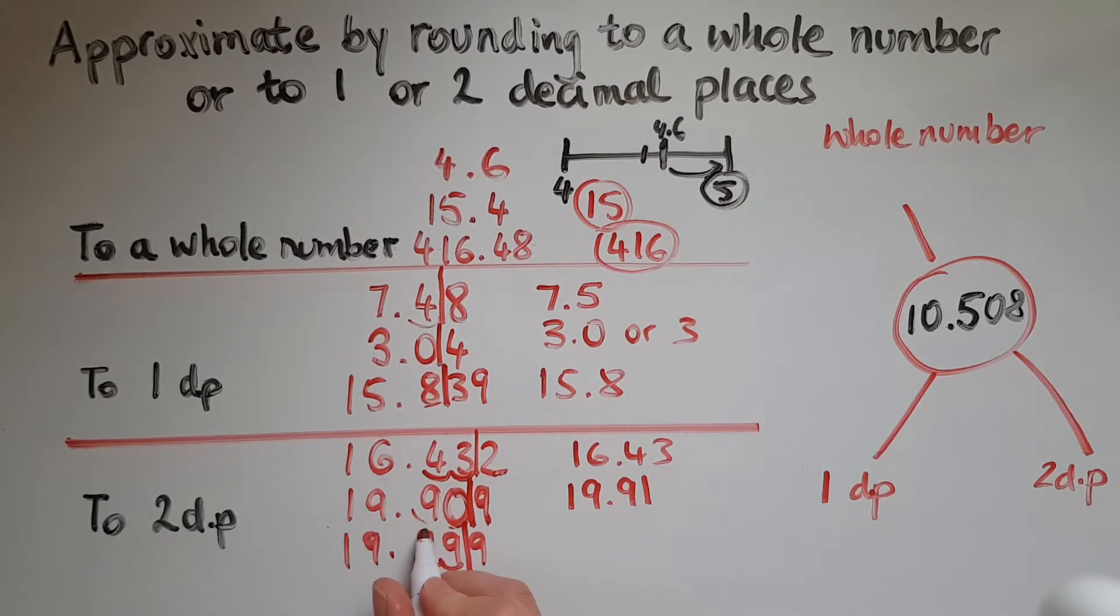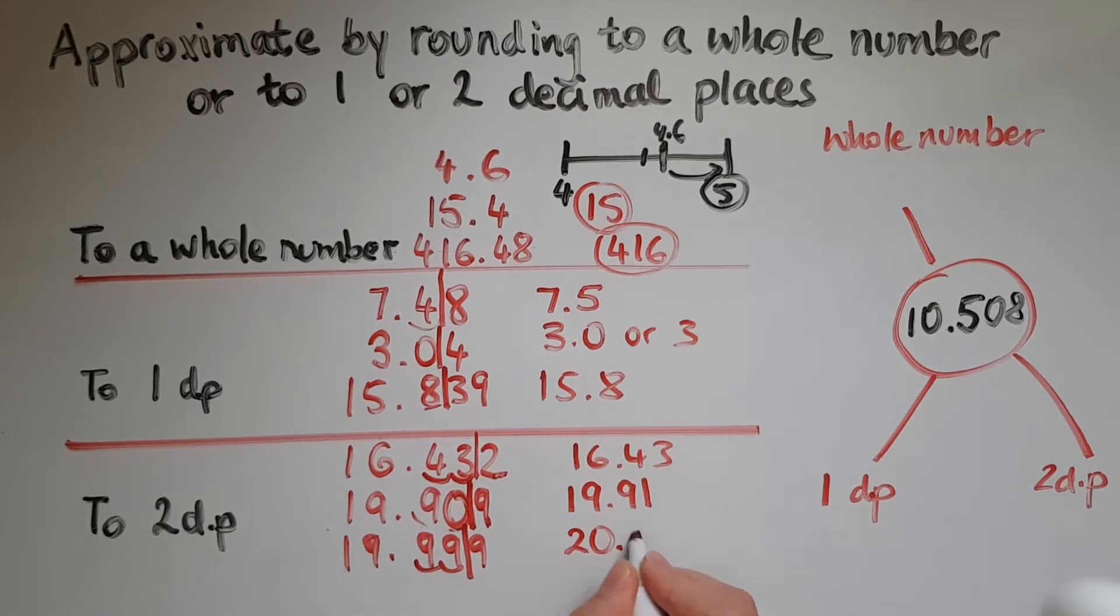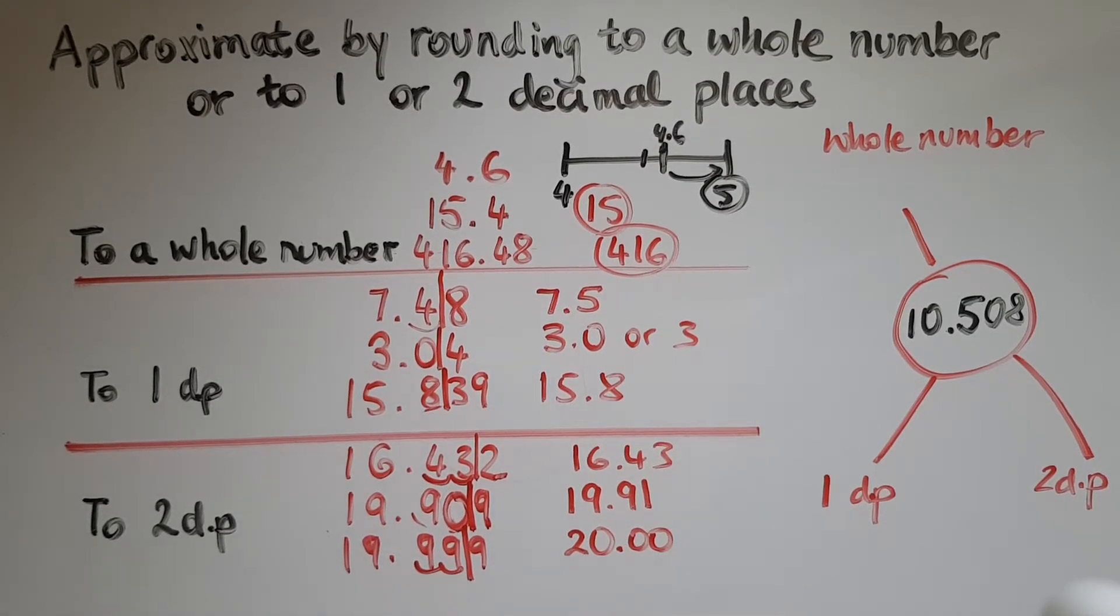it means we need to transfer 1 over here and then 1 over there. So this now, rounded to two decimal places, becomes 20 or 20.00 if you like.